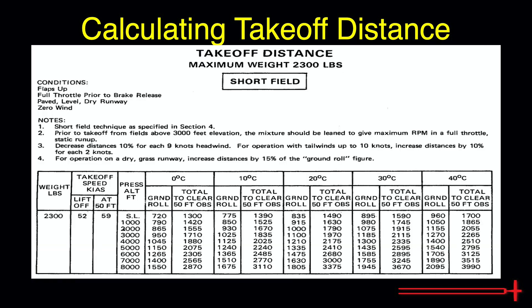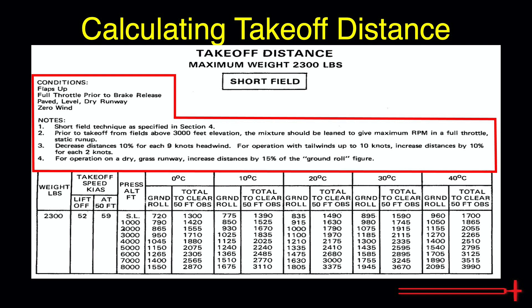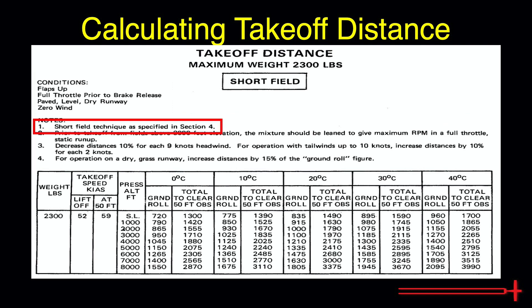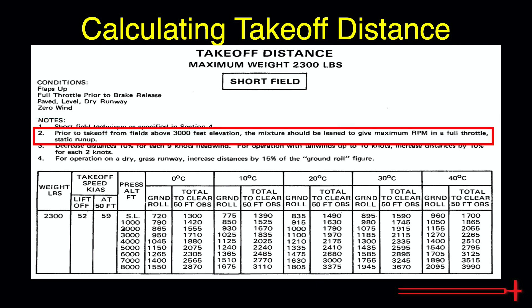Before diving into the chart, we must read through the notes. The distances below were determined using proper short field technique, meaning that if we plan to perform a normal or soft field takeoff, we can expect our takeoff distance to be greater than these listed values. A full-rich mixture is used for takeoffs from fields below 3,000 feet MSL, and above that altitude, mixture should be leaned to peak RPM. This is important and will keep your spark plugs from fouling, which translates to decreased risk of an in-flight engine failure or loss of thrust.